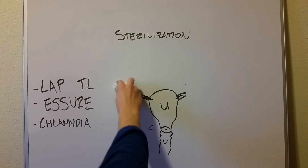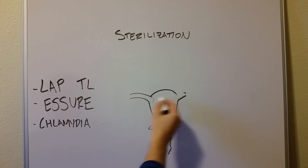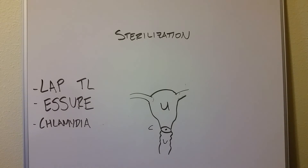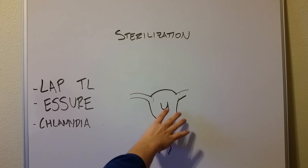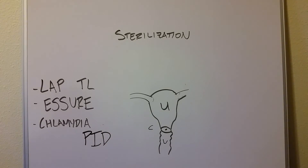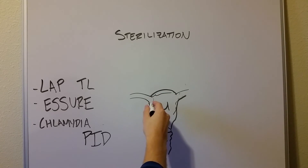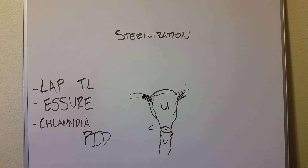The reason I bring up chlamydia — which obviously isn't an elective form of sterilization — is that if you have a bad case of chlamydia that goes untreated, it can ascend into the uterus and the uterine cavity, turning into what's called pelvic inflammatory disease, or PID. Pelvic inflammatory disease involves inflammation similar to that seen in the Essure procedure, and that inflammation can occur all throughout the pelvis or uterine cavity. If that inflammation reaches the fallopian tube — whether one side or bilateral — it can cause that same mechanical obstruction as the Essure procedure.